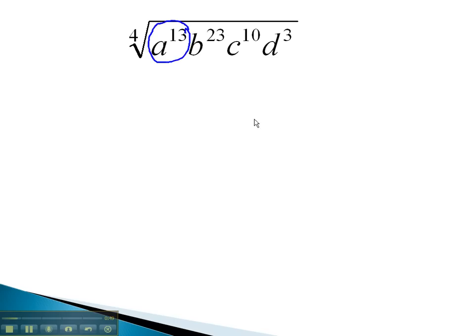When we divide a to the 13th, the exponent by 4, 13 divided by 4 is 3. Three a's come out. However, when we divide, there still is a remainder of 1. This means one a remains inside.